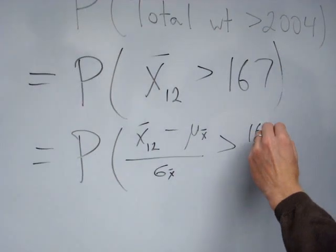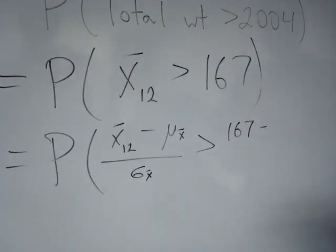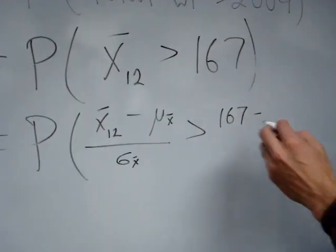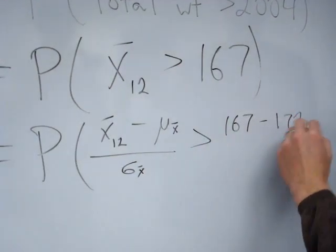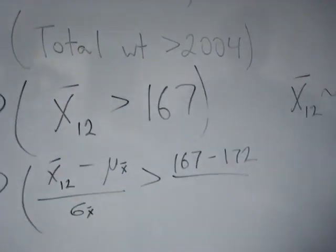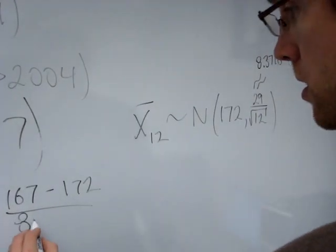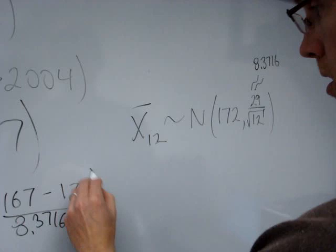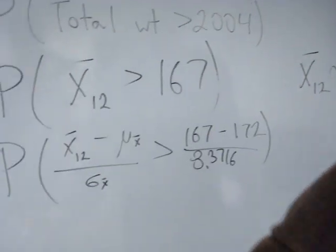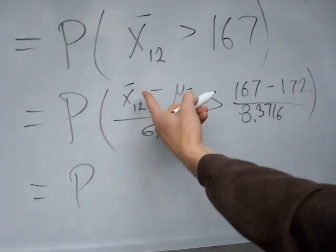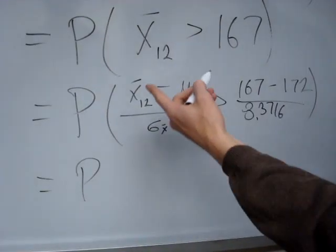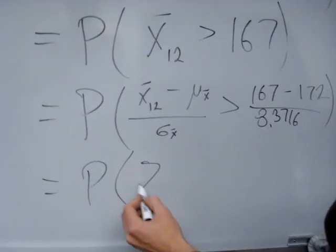And here we'll standardize. So mu x-bar is equal to 172, and sigma x-bar is equal, it's not equal to 29, it's equal to 8.3716. And since I took a normal random variable and standardized it, this is Z.